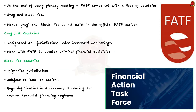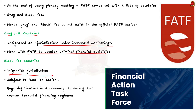At the end of every plenary meeting, FATF comes out with two lists of countries: gray and blacklist. Gray-listed countries are designated as jurisdictions under increased monitoring and work with FATF to counter criminal financial activities. Blacklisted countries are high-risk jurisdictions subject to a call for action — these nations have huge deficiencies in their anti-money laundering and counter-terrorism financial regimes.